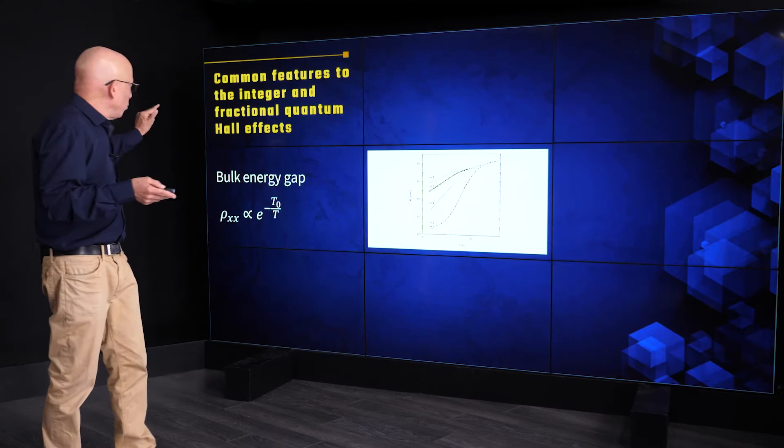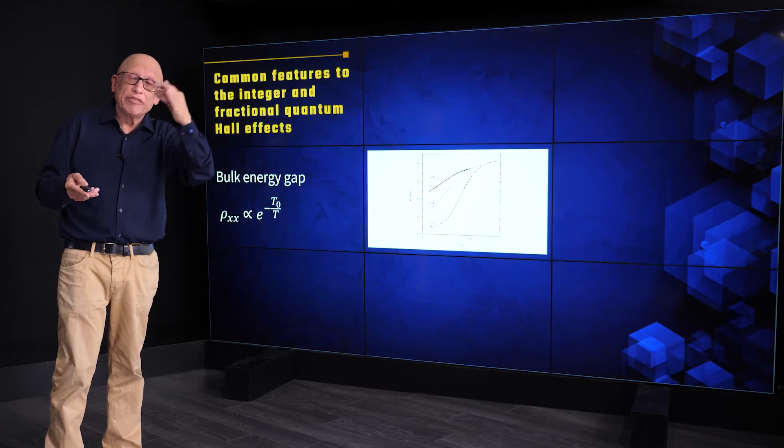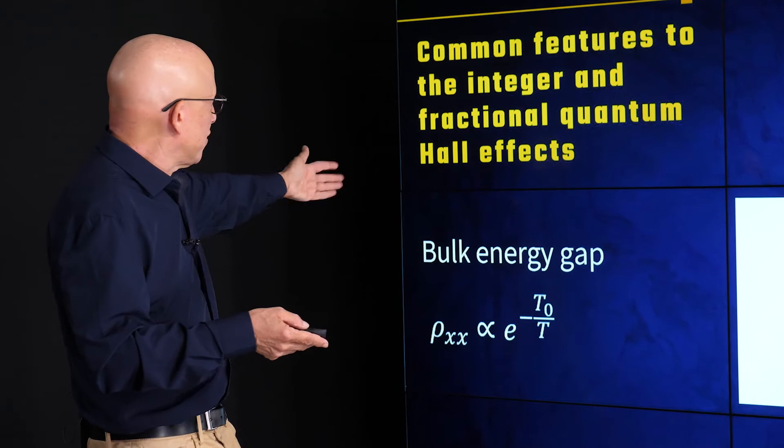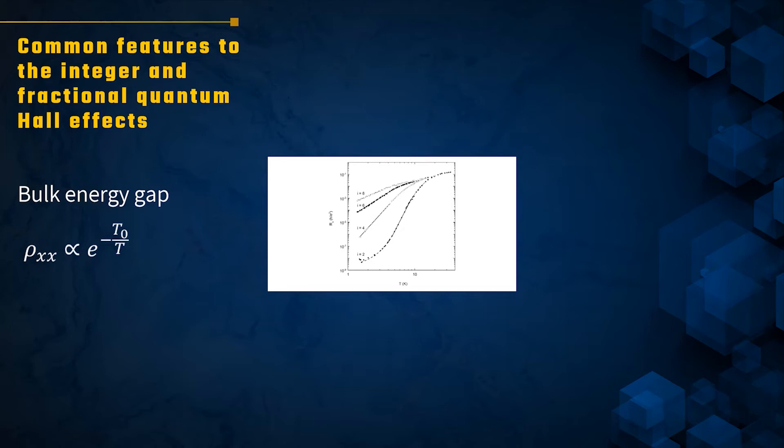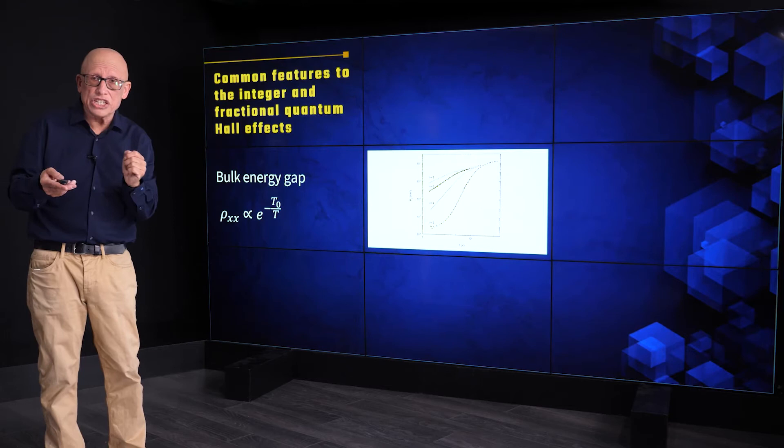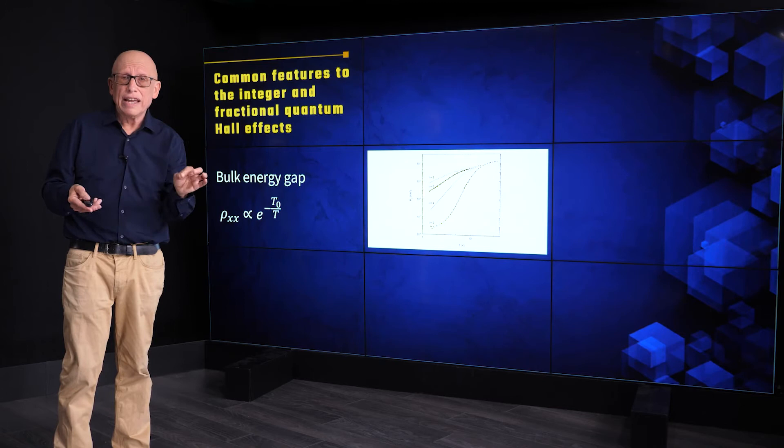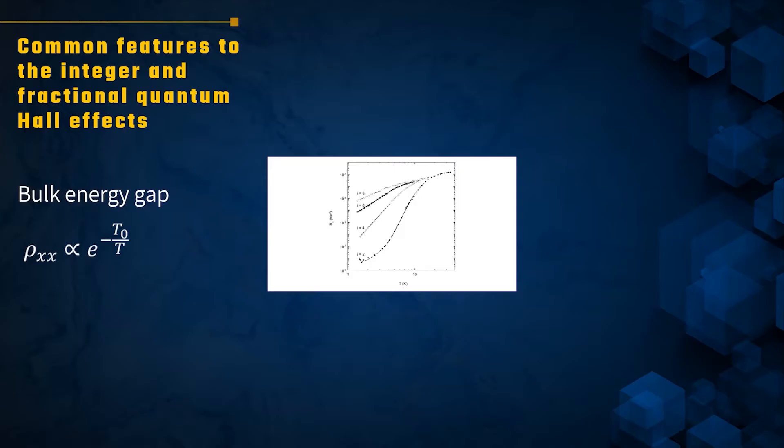So, one example that's common to both is if you look at the longitudinal resistivity. I said that it's zero. But in fact, as you measure it more and more precisely, zero is never exactly zero. You see that its temperature dependence is of this Boltzmann type of form, or Arrhenius type of form. It's proportional to the exponent of minus T zero over temperature. So you can see the resistivity going down by several orders of magnitude when you change the temperature by about one order of magnitude. That is an indication of the existence of a gap in the bulk of the sample.